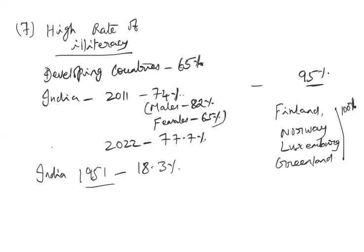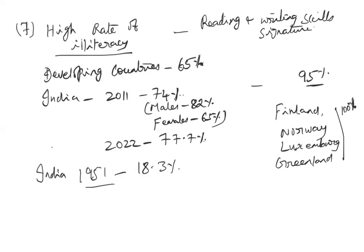We still have a long way to go. Moreover, literacy is defined very basically — just reading and writing skills or the ability to put your own signature. If we include additional parameters like writing a proper grammatical sentence or basic arithmetic, the literacy rate would fall even further.